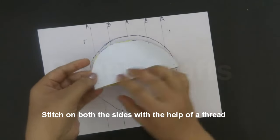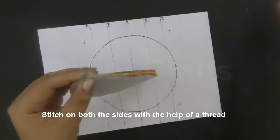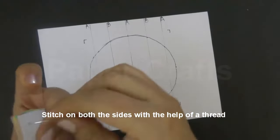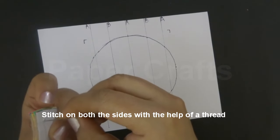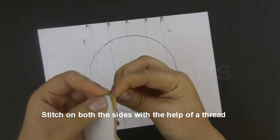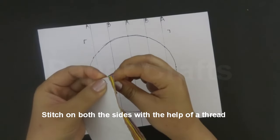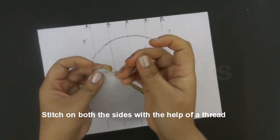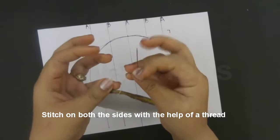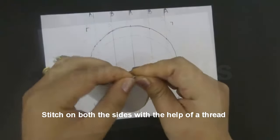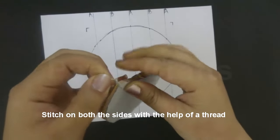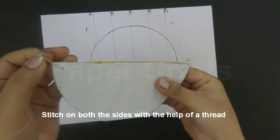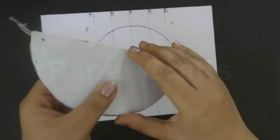Now we will stitch it with the help of thread on both the corners. While tying the knot make sure that the knots are loose enough to let the ball open properly.